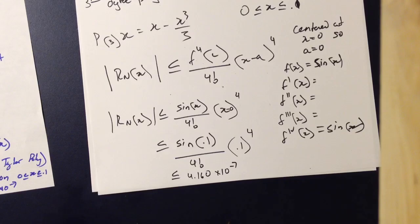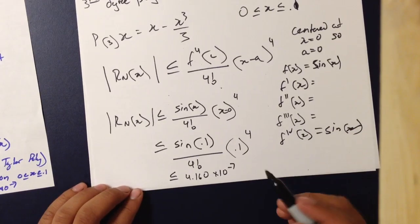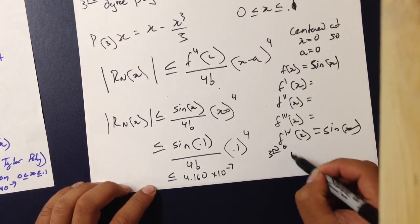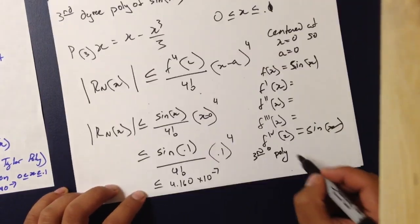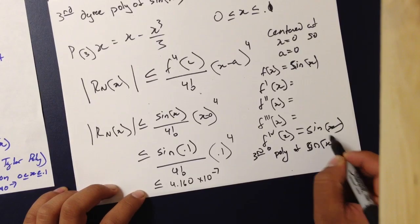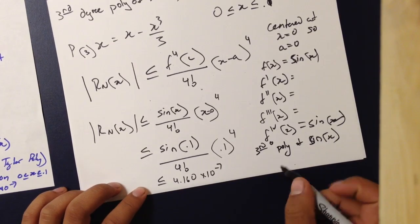So, what you've basically done here is said that the third-degree Taylor polynomial estimation of sine of x varies from the actual function